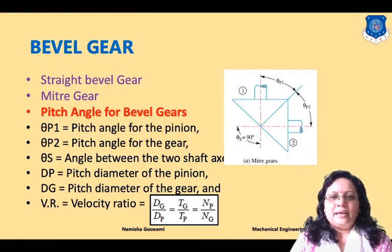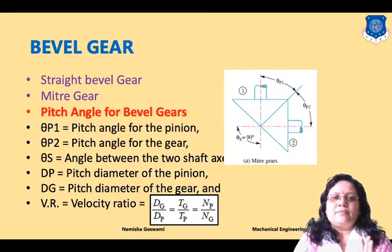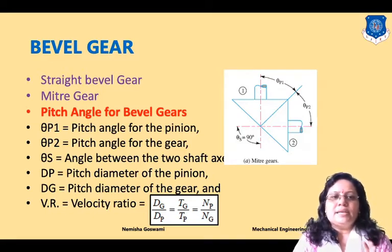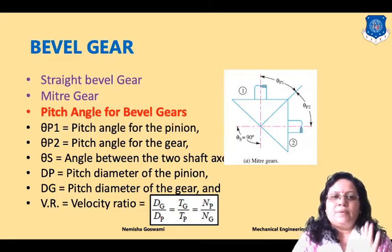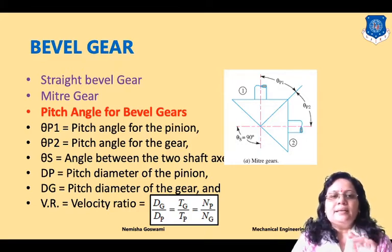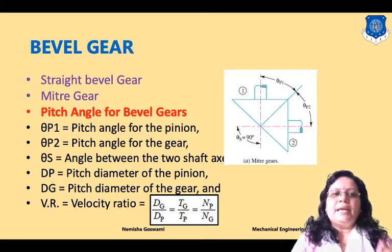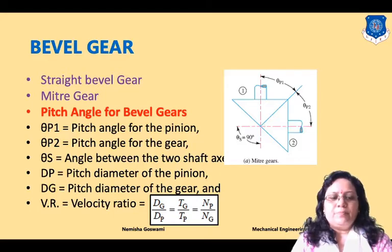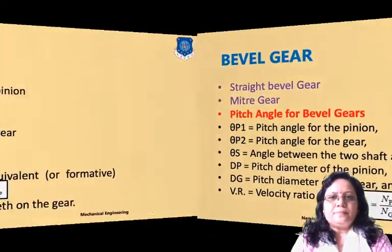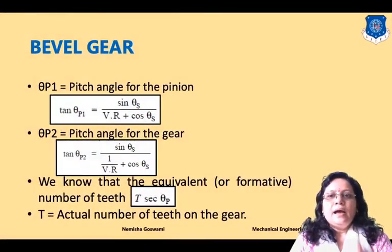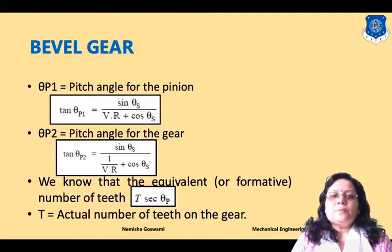dp and dg indicate pitch diameter for pinion and gear. The velocity ratio is given by: dg/dp = tg/tp = np/ng, where g indicates gear and p indicates pinion.